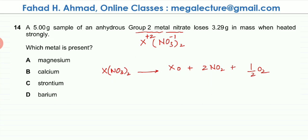Now the question states that there's 5 grams of anhydrous Group 2 metal nitrate, so I know the mass of this substance is 5 grams, and it loses 3.29 grams in mass. That means these are gases, so this is the mass that has been lost - 3.29 grams mass lost because these gases are going to escape.